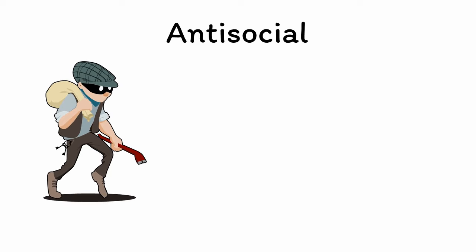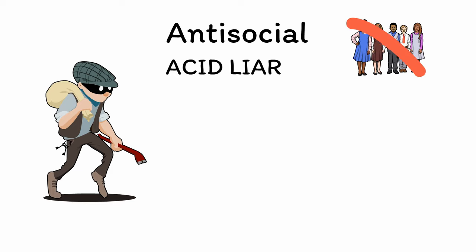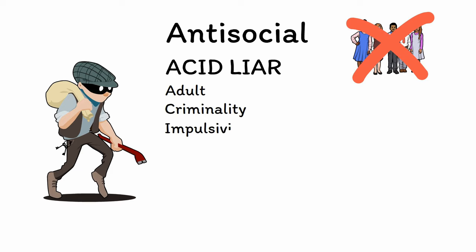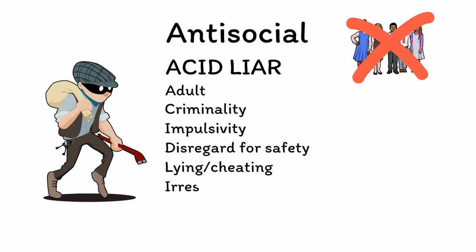Next, Antisocial Personality Disorder is characterized by a persistent pattern of behavior that infringes on the rights of others. You can use the mnemonic ACID LIAR to remember the important features. First, out of all the personality disorders, ASPD is the only one that cannot be diagnosed in children. The rest of the acronym covers: recurrent criminality, high impulsivity and difficulty controlling behavior, reckless disregard for safety, frequent lying, cheating, or deceit, chronic irresponsibility and failure to honor debts or care for family, outright aggression or physical violence, and a pattern of remorselessness when asked about their behavior.